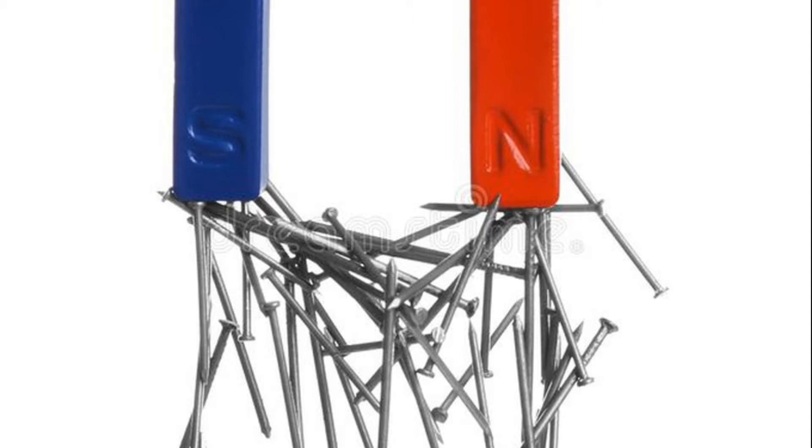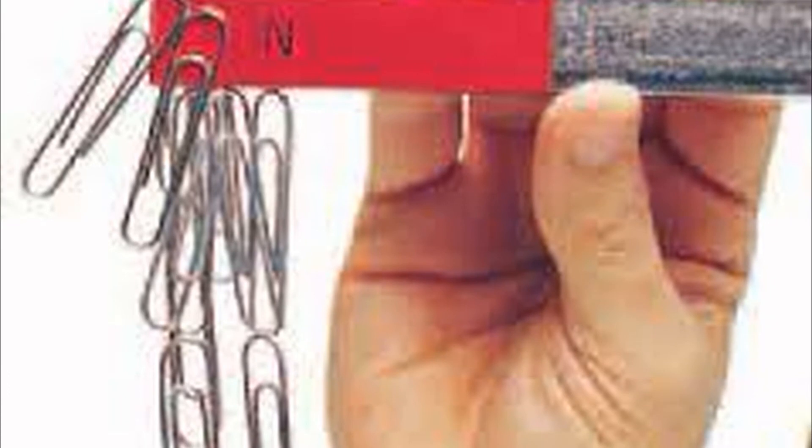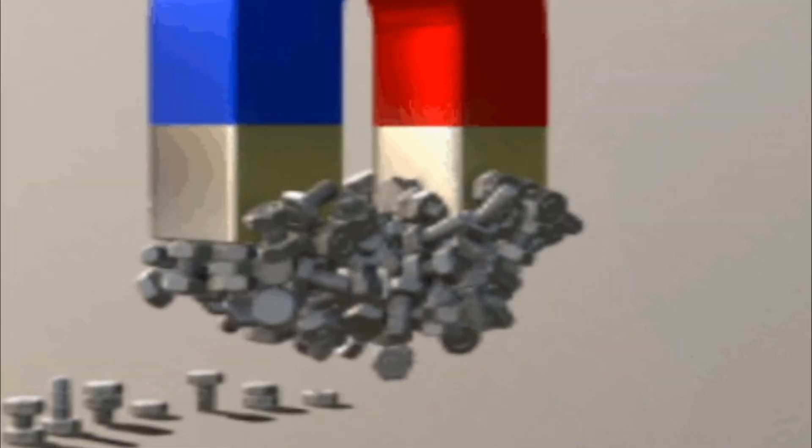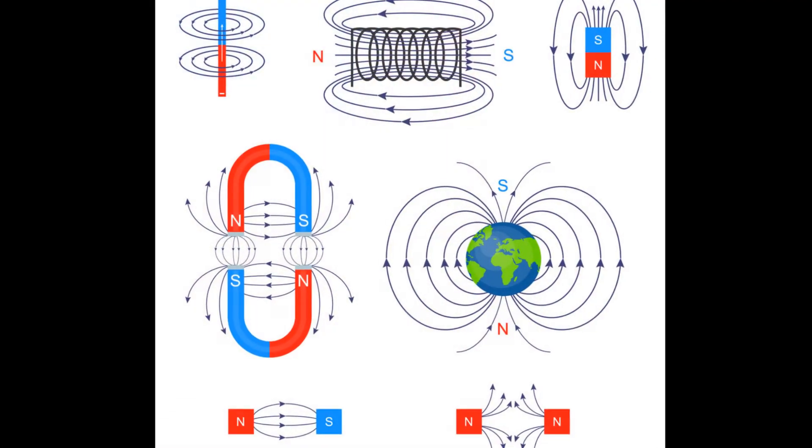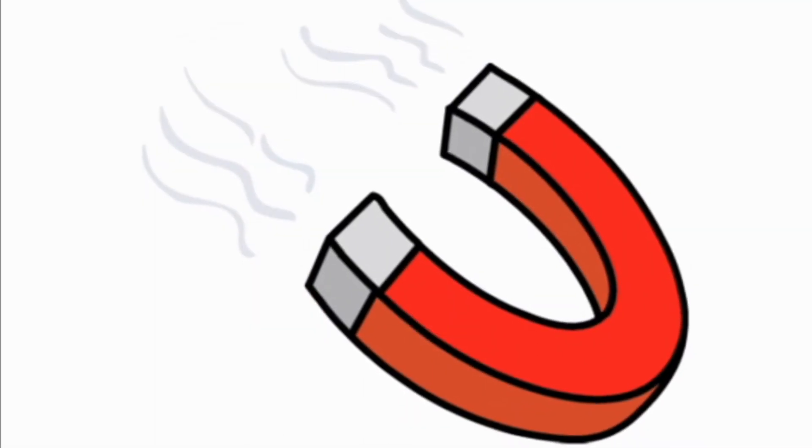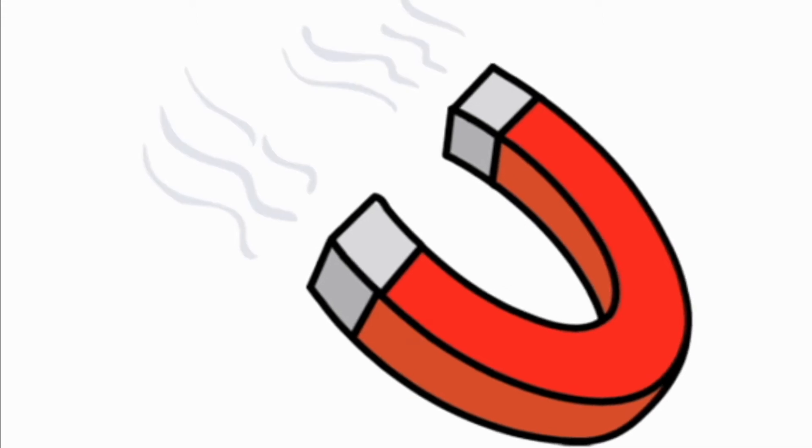It is observed that if another pin is brought near the first pin, the second pin sticks to the first pin. As the number of pins increased, the intensity with which the subsequent pins are attracted decreases. The pin at the end of the chain is not held very strongly and drops down at the slightest shake. This suggests that there is a region around the magnet where its effect can be felt. This influence decreases as the object moves further and further away from the magnet.